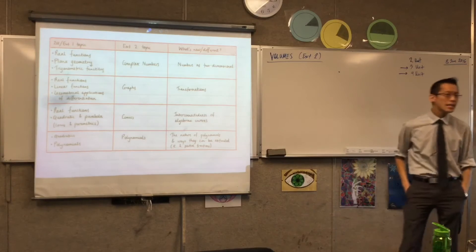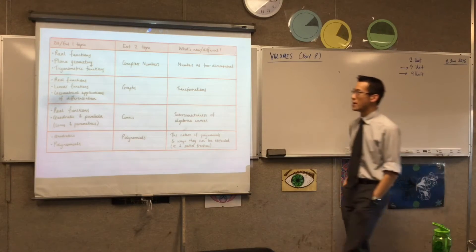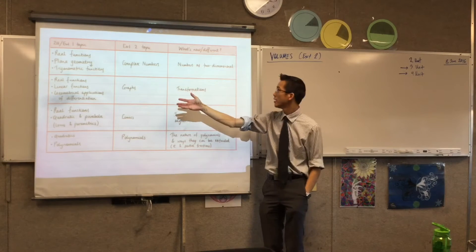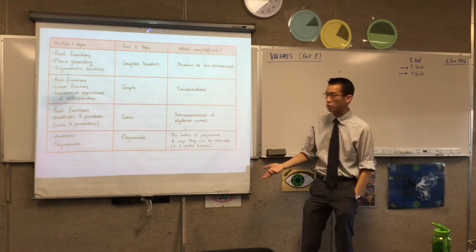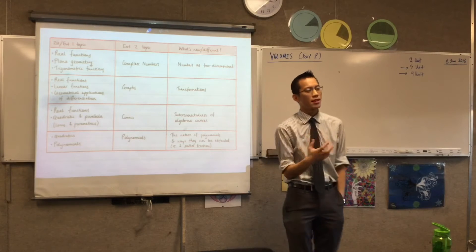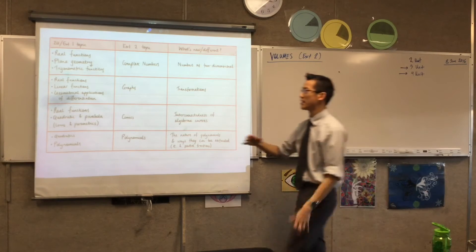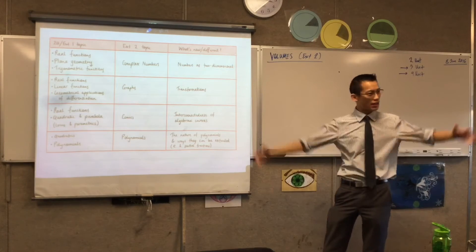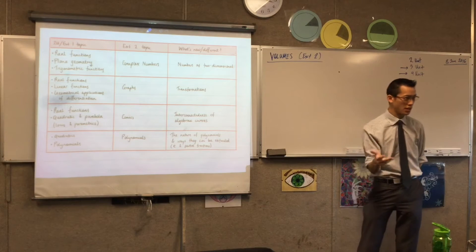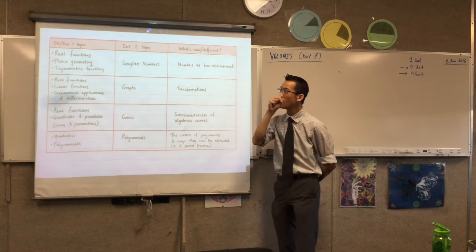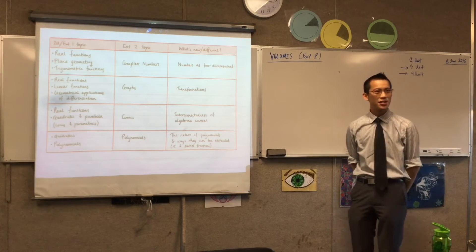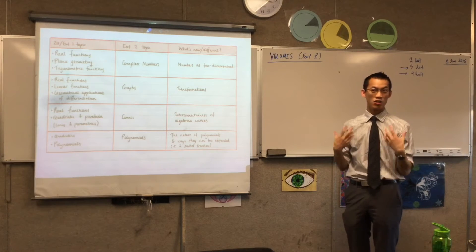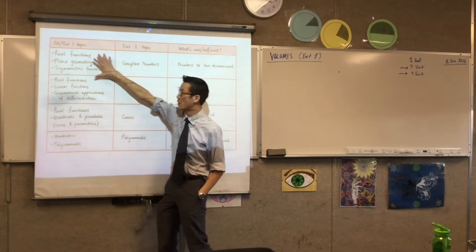Here's what we've done so far in Extension 2. The way I've arranged it: we've got 2-unit and Extension 1 topics that feed into an Extension 2 topic, and I want to talk about what's new and different. Complex numbers is where we kicked off, which is a hugely fun topic, partly because it brings together massive building blocks from Extension 1 and from K to 10. It's the culmination of so much mathematics - real functions, plane geometry, and trigonometric functions - all the big branches we've been focusing on, with the exception of calculus. Calculus with complex functions is actually a whole new thing called analysis, which I hope some of you get to discover at uni.